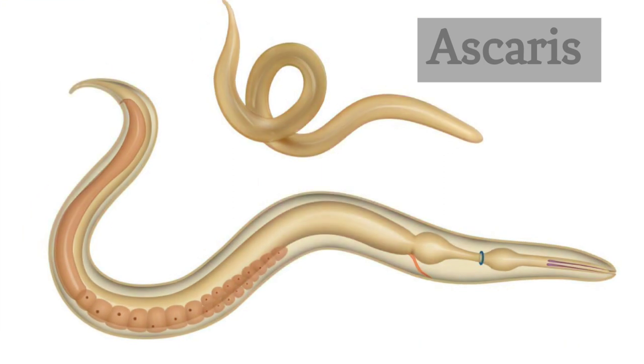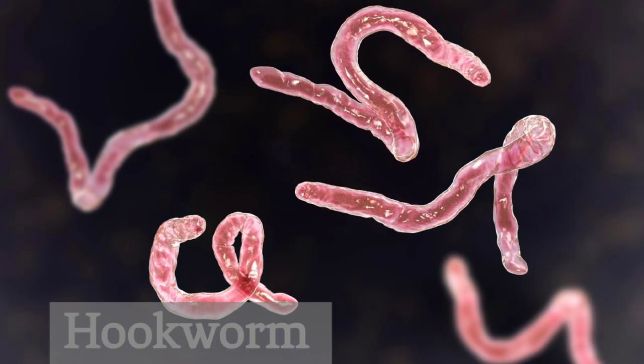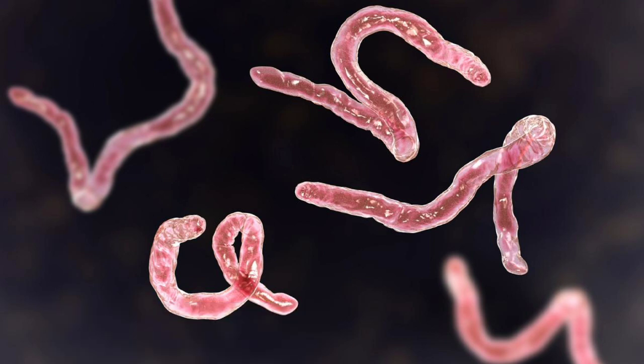13. Ascaris. Ascaris lumbricoides is a common parasitic roundworm that infects the human intestines. 14. Hookworms. Hookworms, such as Ancylostoma and Necator species, are parasitic nematodes that infect the small intestine of mammals, including humans.